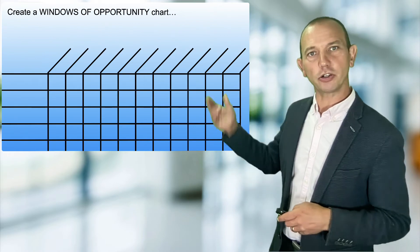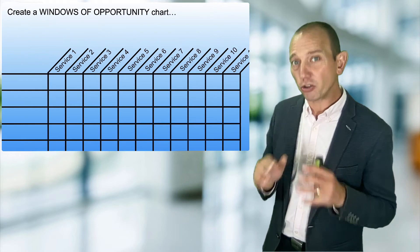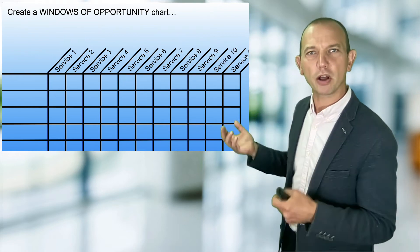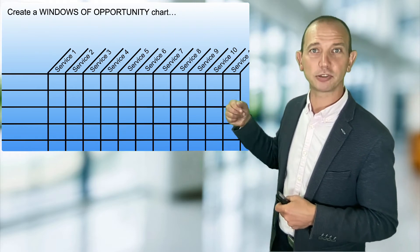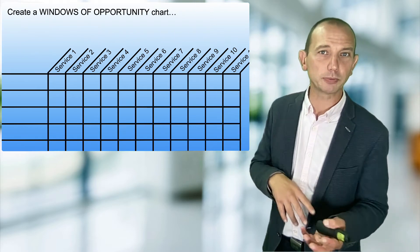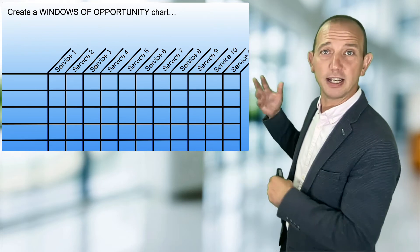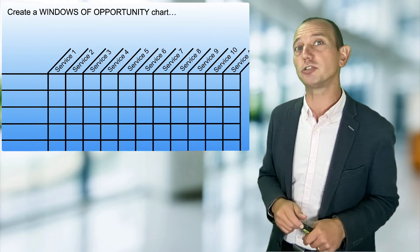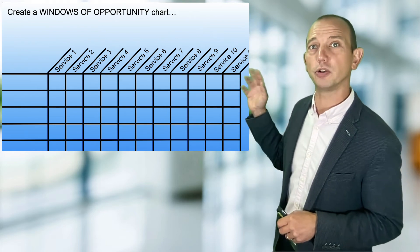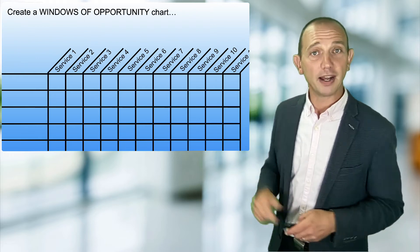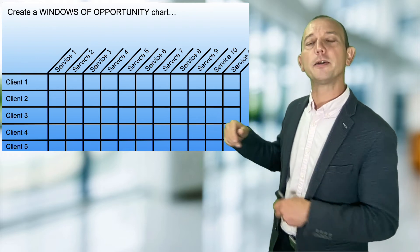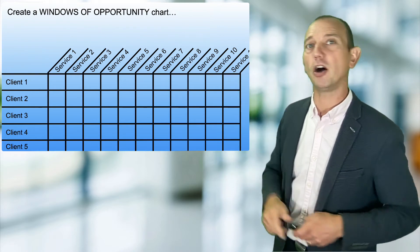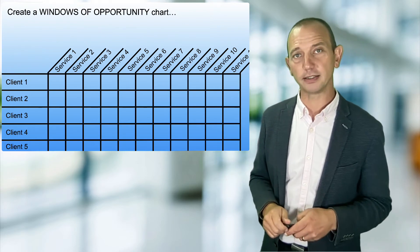It's a spreadsheet or it can be a whiteboard—really you just want to create a diagram like this, a table. Across the top, list all of the possible services that you could offer to your clients. Maybe brainstorm as a team: compliance-related stuff, management information such as management accounts and cash flow forecasting, tax planning services, maybe even business advisory solutions. Map them all across the top, and down the left-hand side list every single client. Then you can mark off which you're already offering and delivering to those clients.